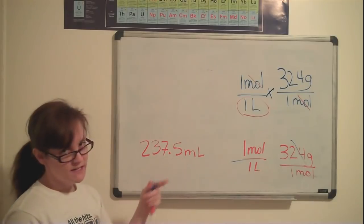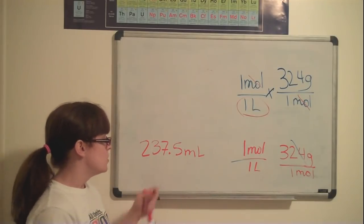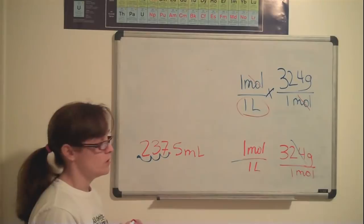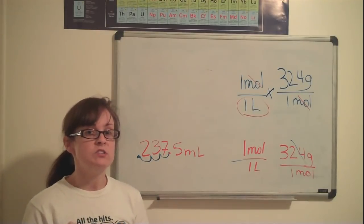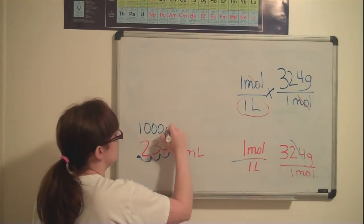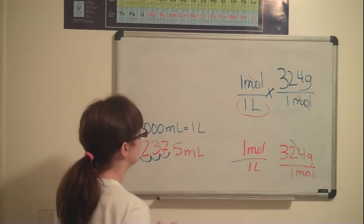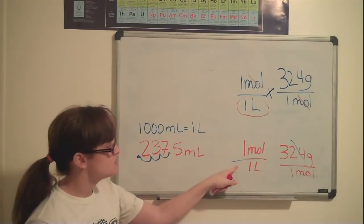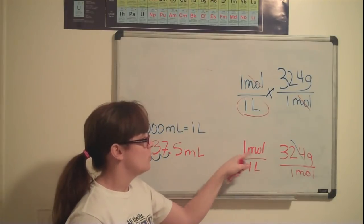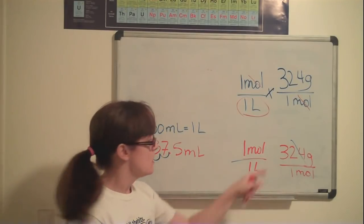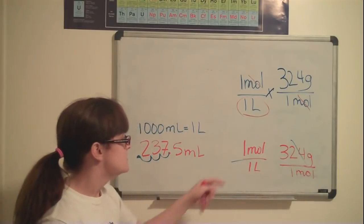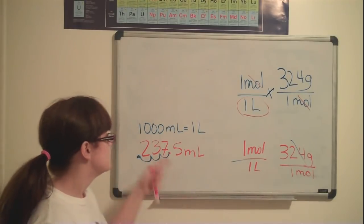Well, this is in milliliters. We need it to be in liters. If you know anything about the metric system, you know all you have to do is move your decimal three places to the left, and it gives you your liters. However, because we are working with stoichiometry, we're going to use the conversion factor. We know that 1,000 milliliters is equal to one liter. We can take this conversion factor and make it into a fraction just as these two are in fractions. These are also conversion factors because one mole of the substance is equal to one liter of the substance. For the molar mass, you know that 324 grams of the substance is equal to one mole of the substance. So these are equivalent, they just have different units.